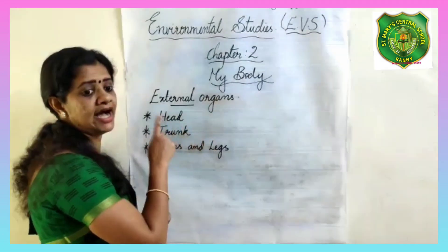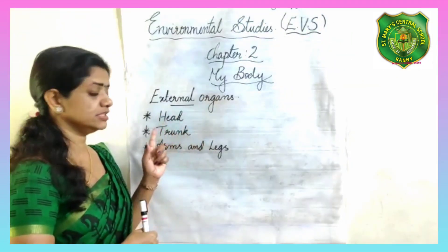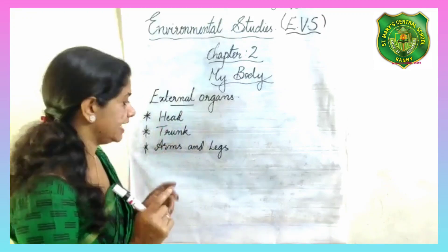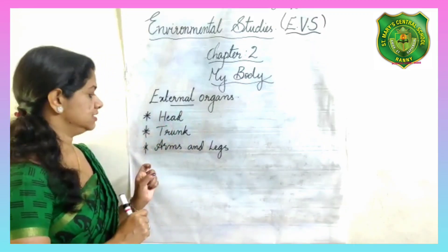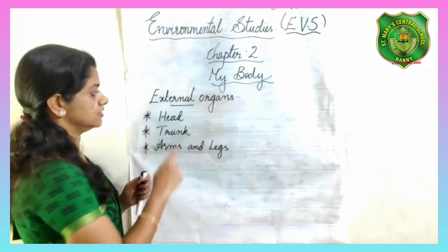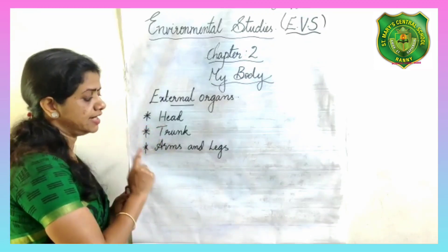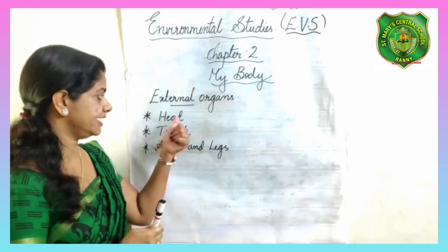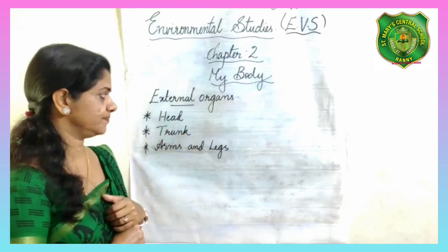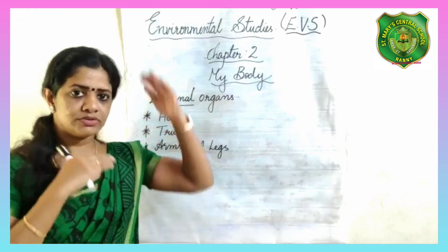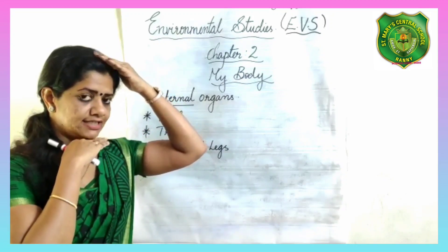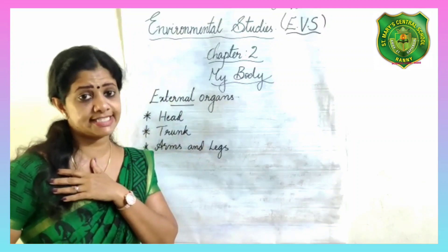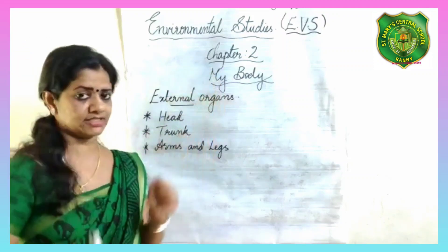External organs are broadly divided into three parts: head, trunk, and arms and legs. The head is the top portion. Below the neck is known as the trunk, and you know arms and legs.